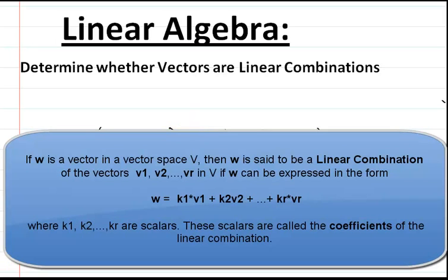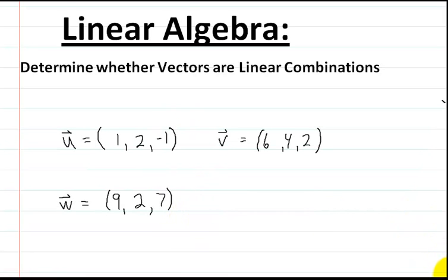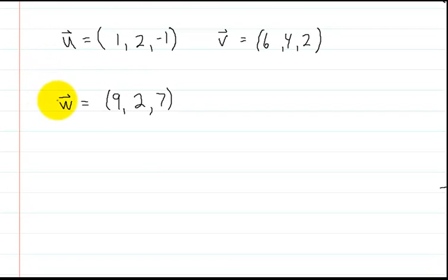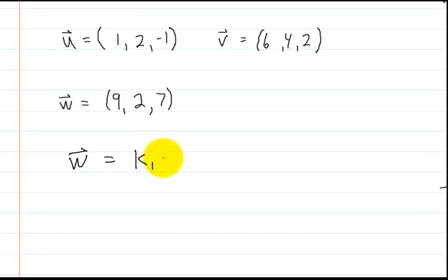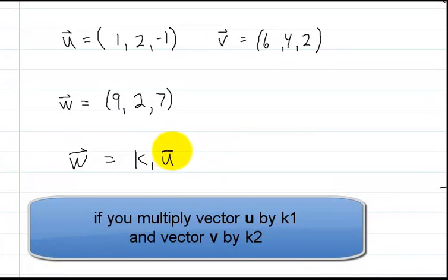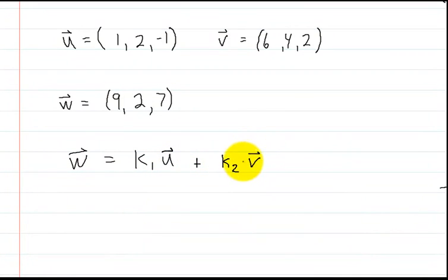So really what they're saying is this. If you have a vector w, and if you multiply vector u by k1, and then you multiply vector v by k2 — if you multiply these two vectors by some constant and you add them together, then you should be able to get vector w. So let's just show you how you're going to solve this.